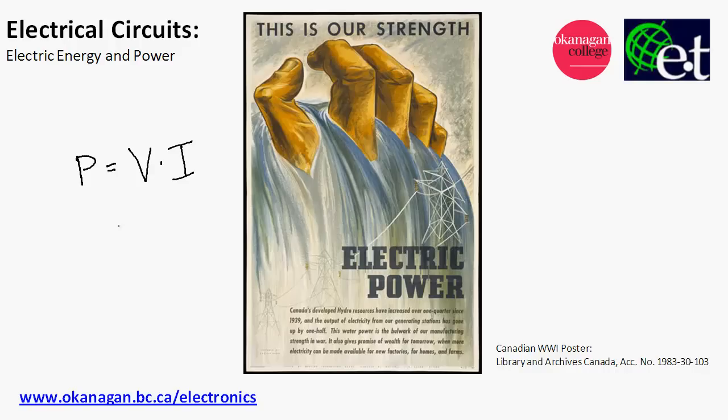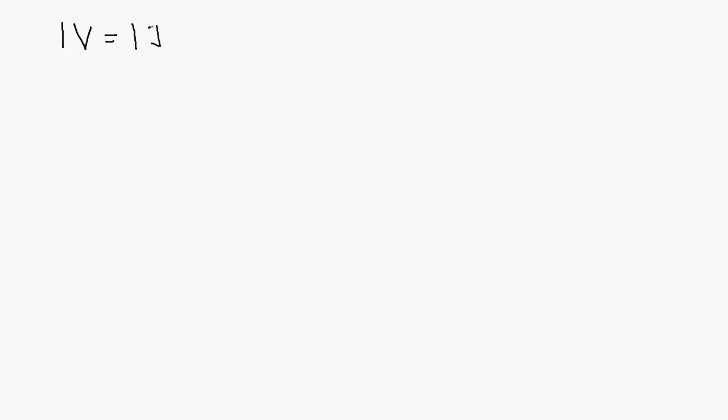But before we get into using this equation, I want to talk a little bit about how I think about energy and power in electric circuits. So to start off with, let's look at 1 volt. What does 1 volt mean? Well if we break it down into component units, 1 volt is equal to 1 joule per coulomb.